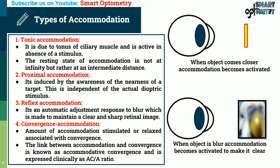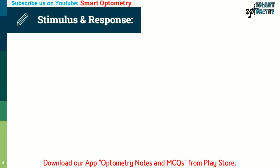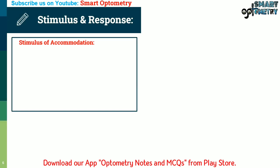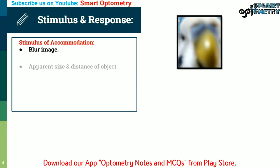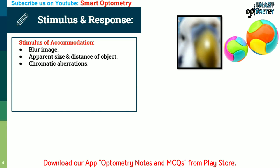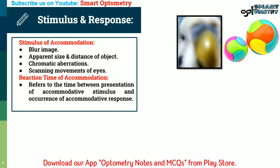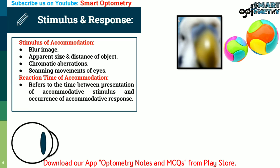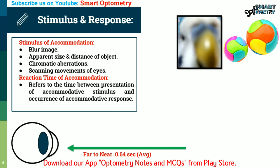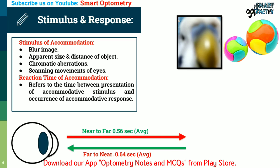The link between accommodation and convergence is known as accommodative convergence, expressed clinically as the AC/A ratio. Stimuli of accommodation include blur image, apparent size and distance of the object, chromatic aberrations, and scanning movements of the eyes. Reaction time of accommodation refers to the time between the presentation of an accommodative stimulus and the occurrence of the accommodative response — from far to near it is 0.64 seconds, and from near to far it is 0.56 seconds.